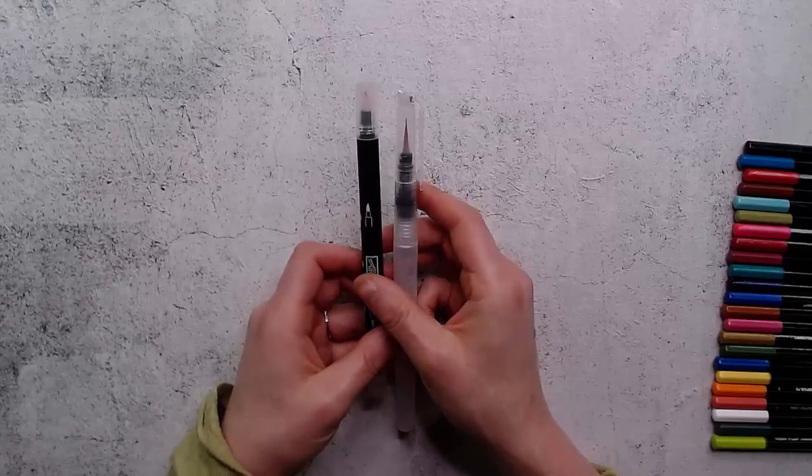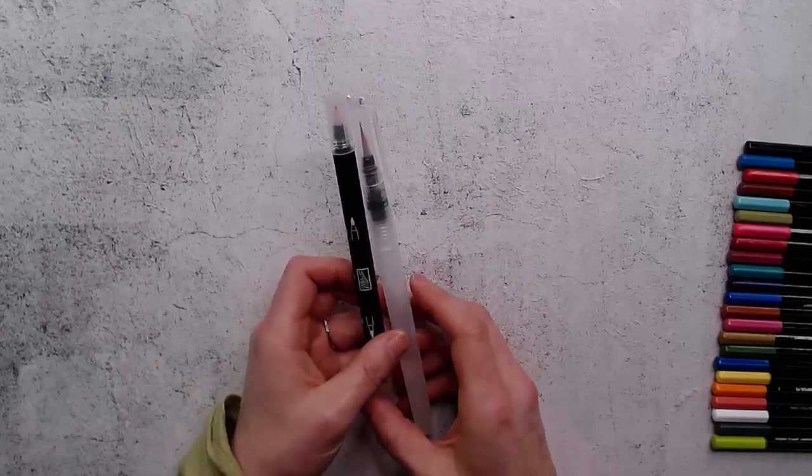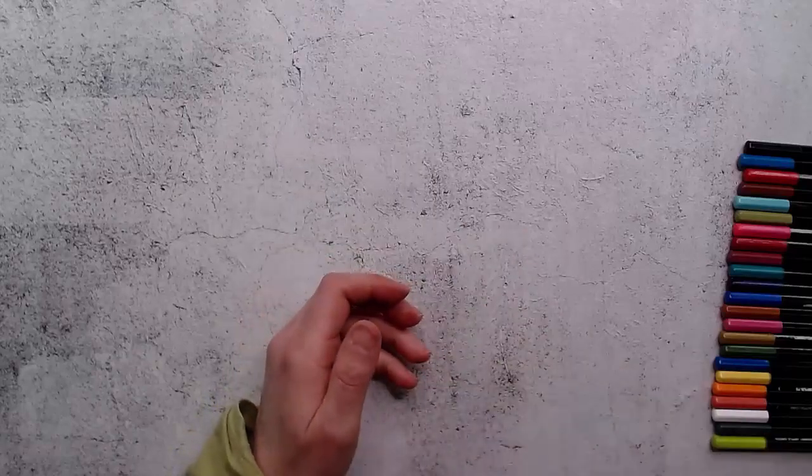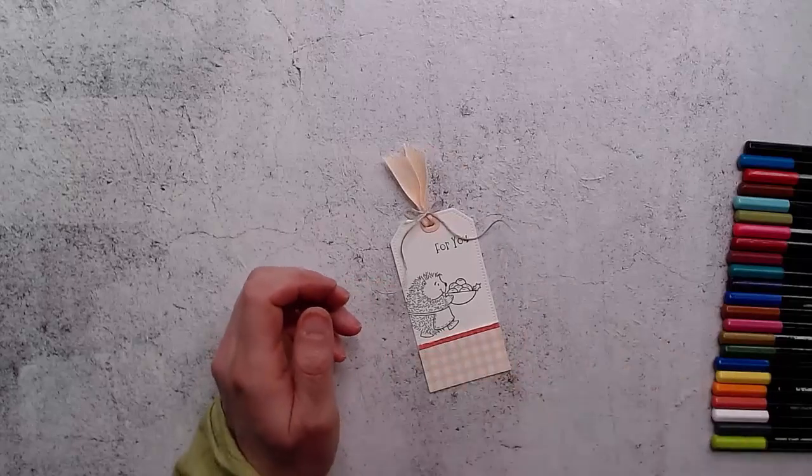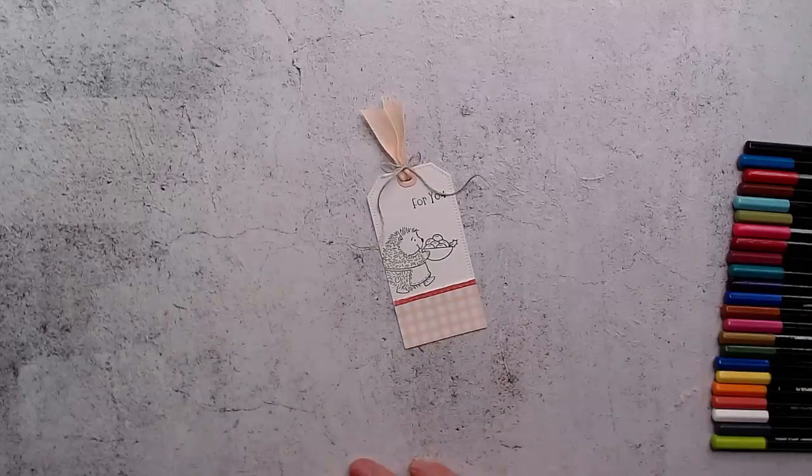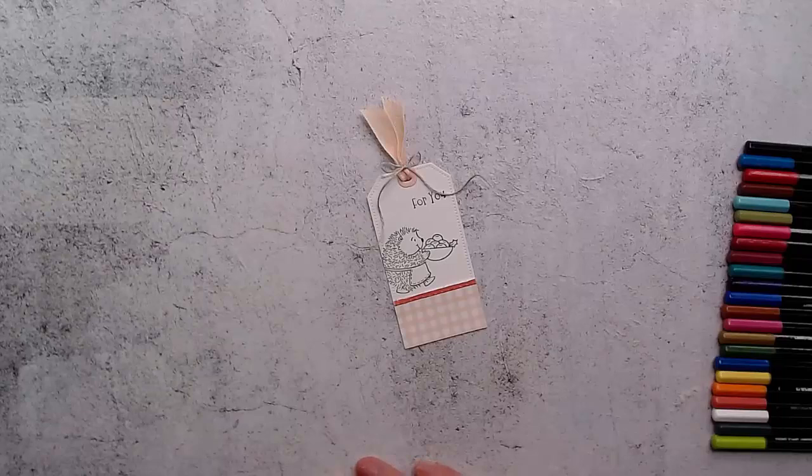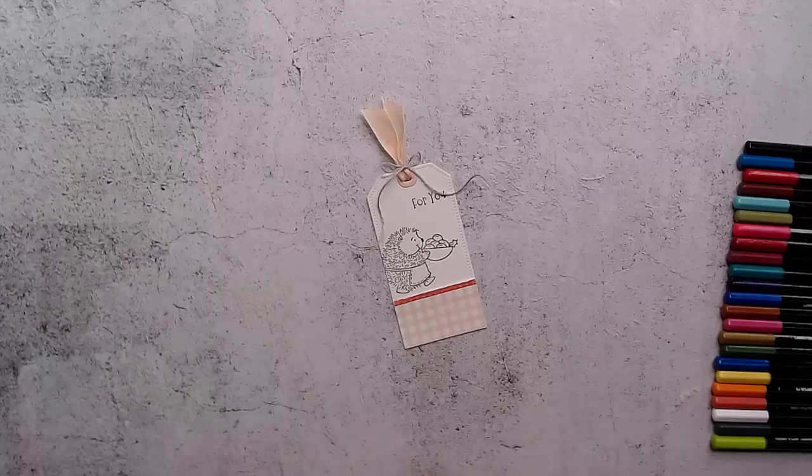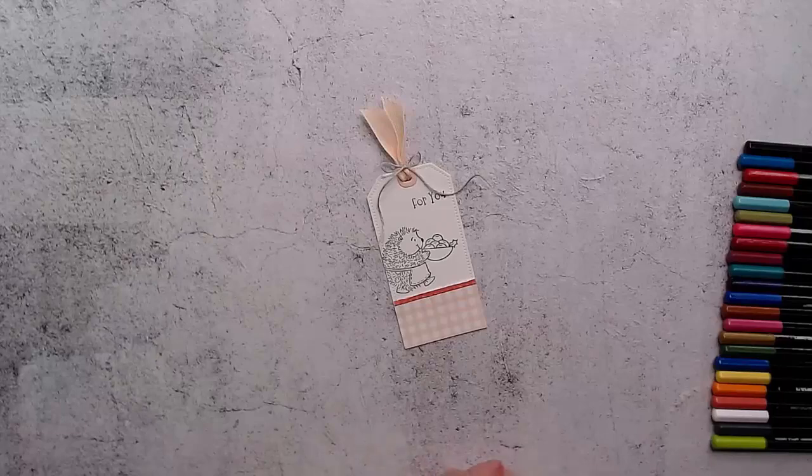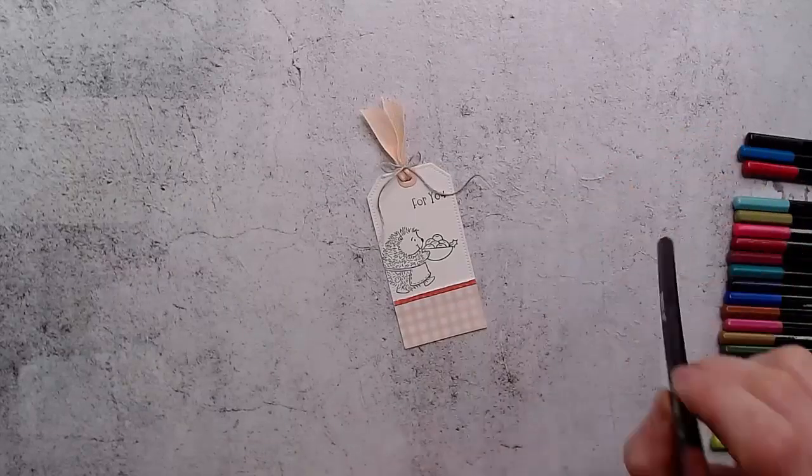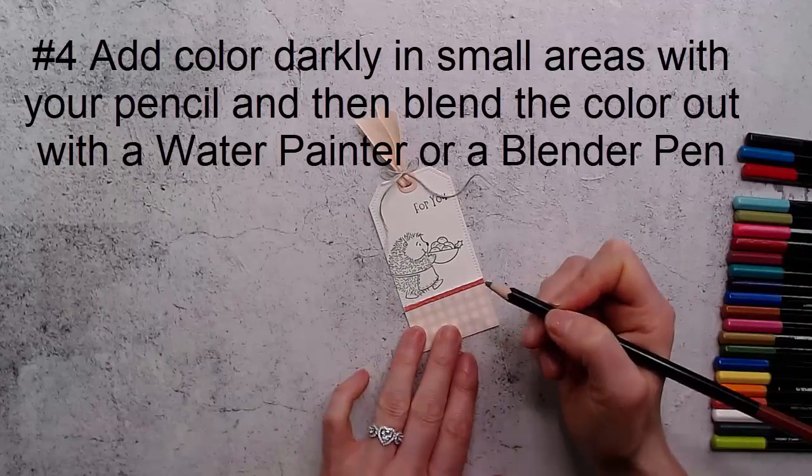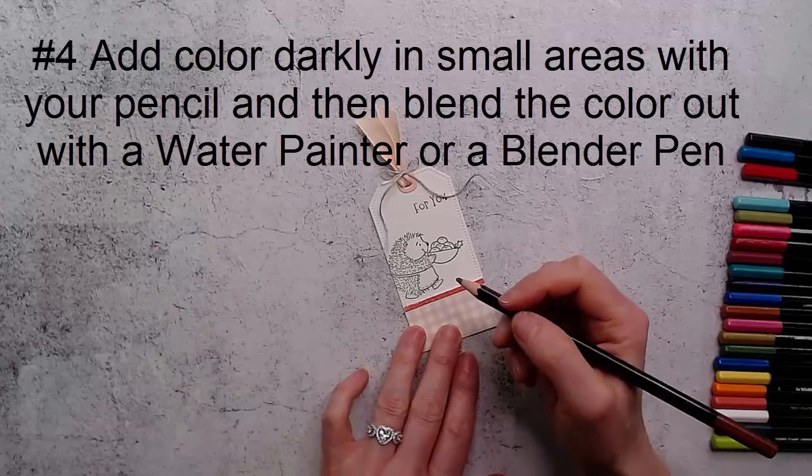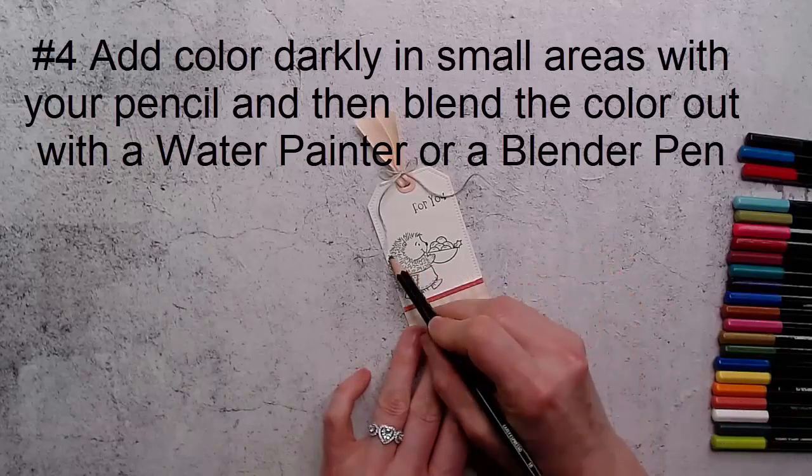Okay so let's look at some coloring techniques. Our first one is I'm going to just make a little tag with you using the Joyful Life stamp set. The first way you can use your pencils is you can just add some color to the image and then spread the color with your blender pen or water painter.